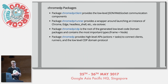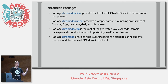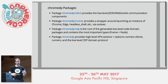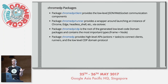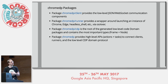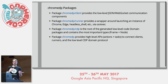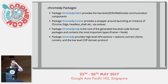ChromeDP is broken up into four major package aspects: the client, the runner, the CDP domains, and the high-level action code — which is kind of the equivalent of Selenium. The client handles all the low-level socket communication using Gorilla WebSocket. The runner is a wrapper around actually launching a Chrome process, allowing you to push all various command-line options through. It works with Chrome, Edge, Headless Shell, and others. At the end of the day it's really just a wrapper around os/exec.